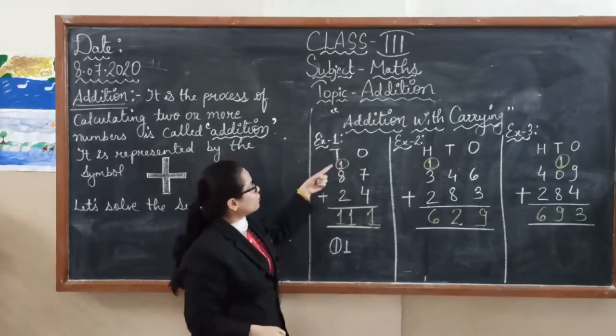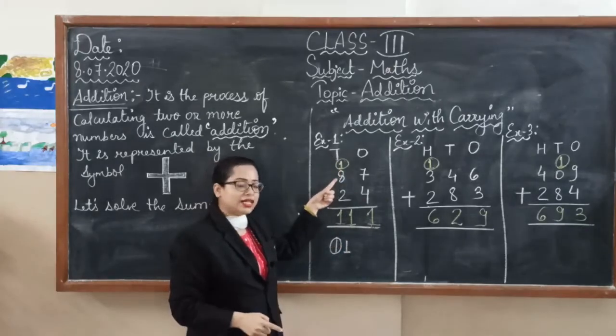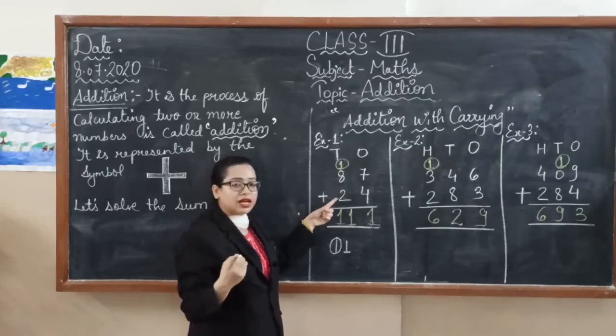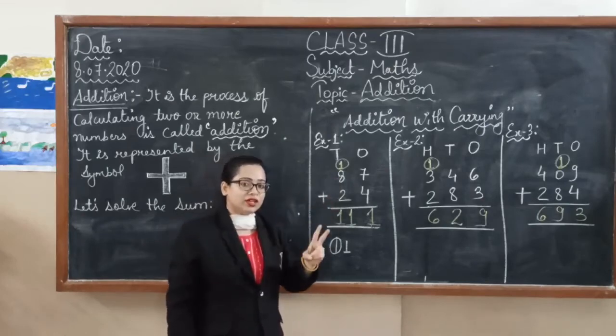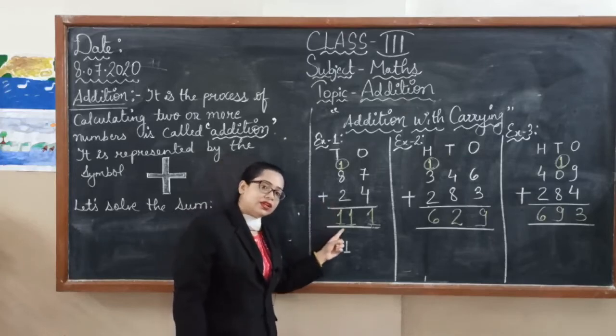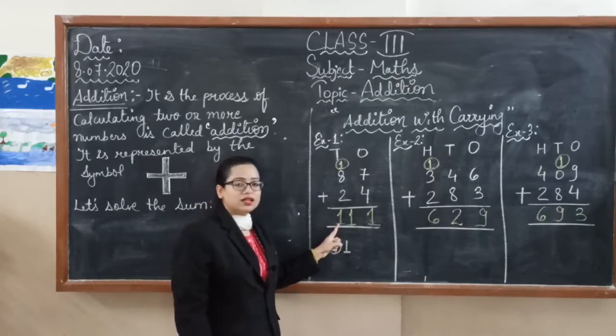Start counting. One plus eight is nine. And after nine, two more numbers. Count ten, eleven. So we will write here eleven. Our final answer is one hundred and eleven.